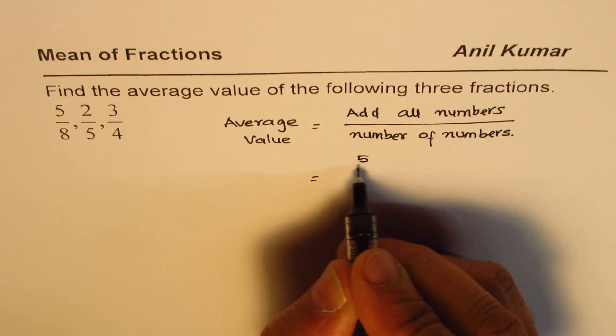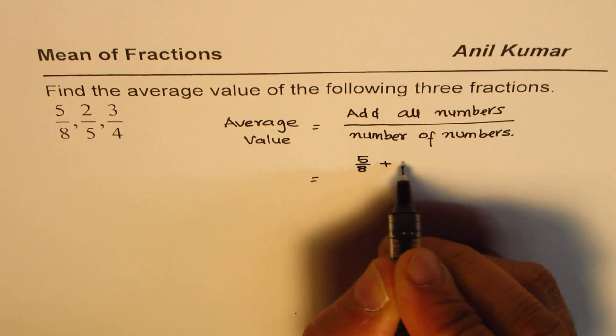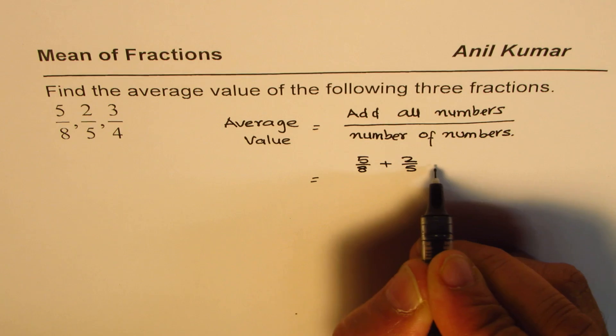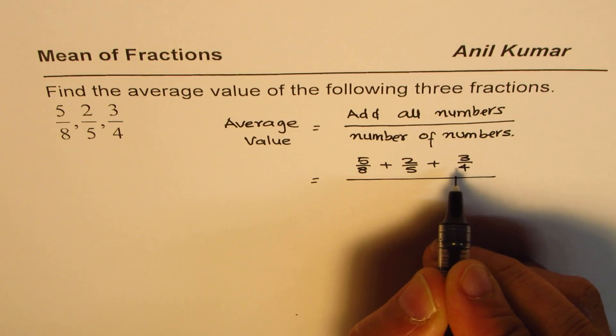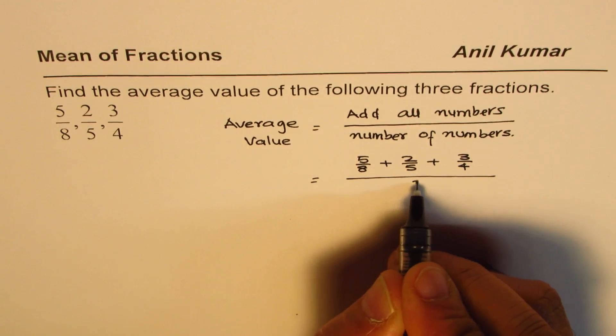Which is 5 over 8 plus 2 over 5 plus 3 over 4 and divide by number of these numbers—1, 2, 3—so divide by the number 3. This is what is the average value.